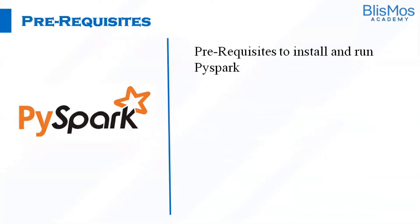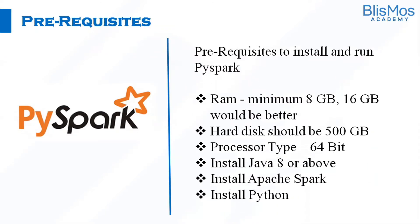What are the prerequisites to install and run PySpark? I'll be telling you both hardware and software requirements. The hardware requirements you would need is RAM of minimum 8 GB, but 16 GB would be preferable. Hard disk should be minimum 500 GB. Processor type should be 64-bit. You need to install Java 8, and you need to install Spark and Python as well.